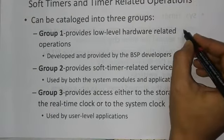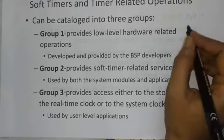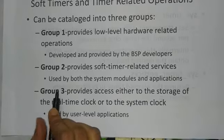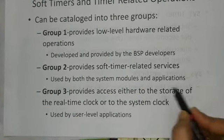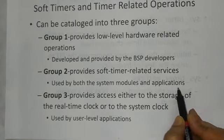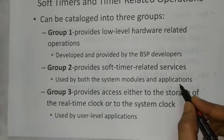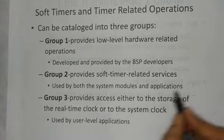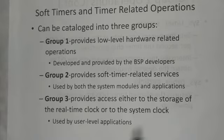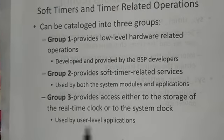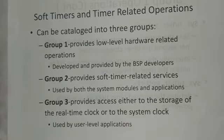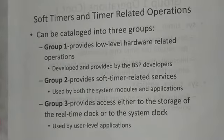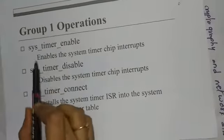Group 2 provides soft timer-related services, which are a combination of system modules and applications. System modules refer to internally developed programs, and applications refer to tasks given by the user. Group 3 provides access either to the storage of the real-time clock or to the system clock. The real-time clock is the general system-installed clock, and the system clock is derived from it. Both are used by user-level applications.